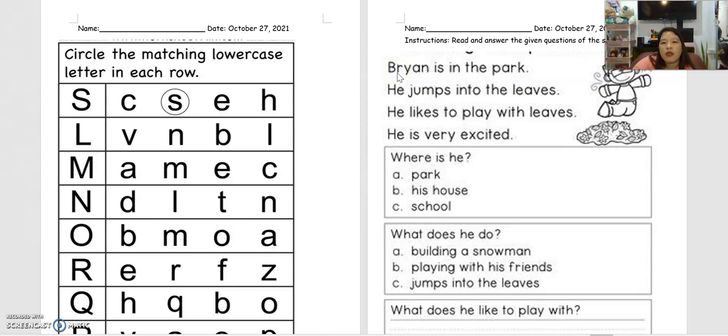I will read it one more time. Bryan is in the park. He jumps into the leaves. He likes to play with leaves. He is very excited. So the first question, where is he? It's multiple choice.